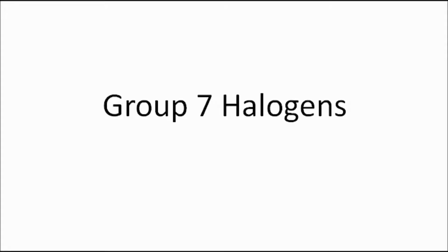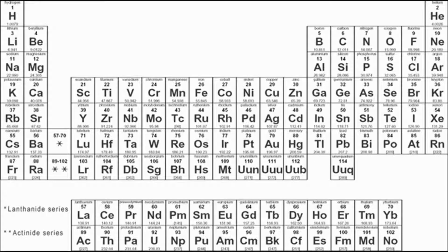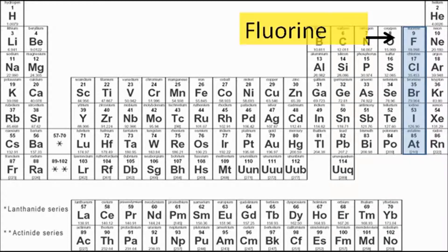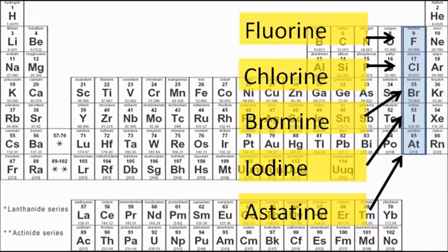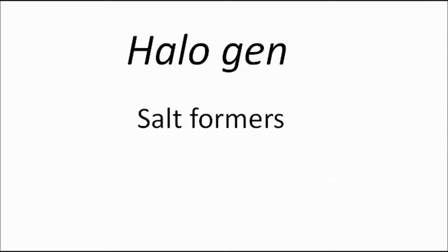Let's have a look at the group 7 halogens. On the periodic table you can find these in group 7 on the right hand side. The group 7 halogens are fluorine, chlorine, bromine, iodine, and astatine. The term halogen comes from the Greek for salt formers, because when you react a group 7 with another metal element you often get a salt formed.